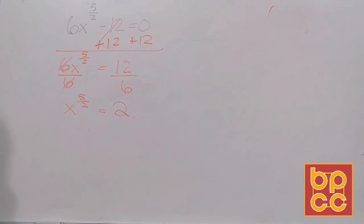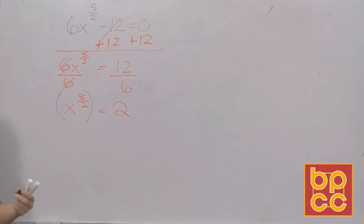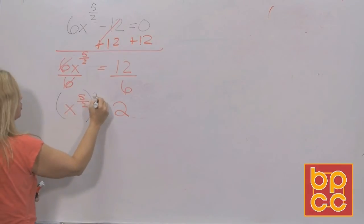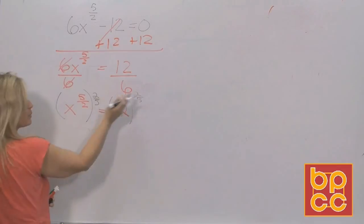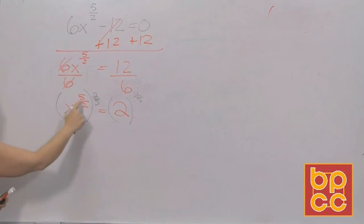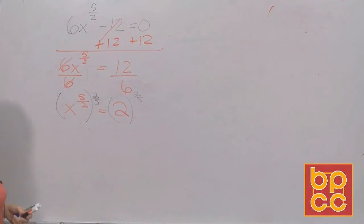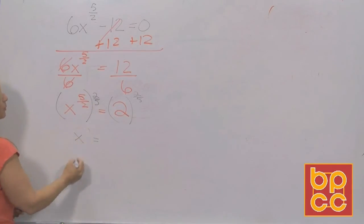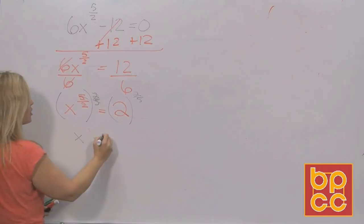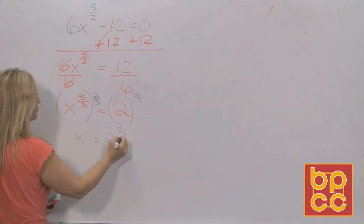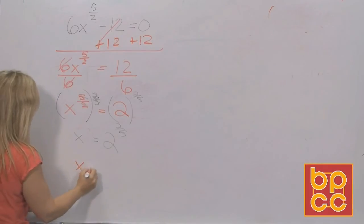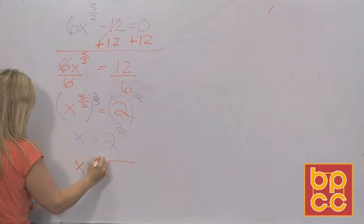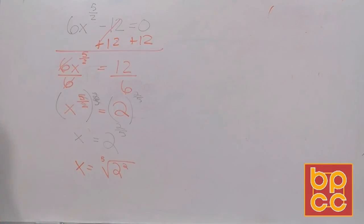Now that the exponent is isolated, apply the reciprocal of five-halves, which is two-fifths, to both sides. Using the power rule, five-halves times two-fifths equals ten-tenths, which is 1, giving x to the first on the left. On the right, 2 to the two-fifths must be rewritten as a root. The denominator is 5, so this is the fifth root of 2 squared.